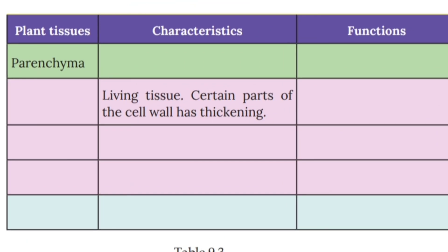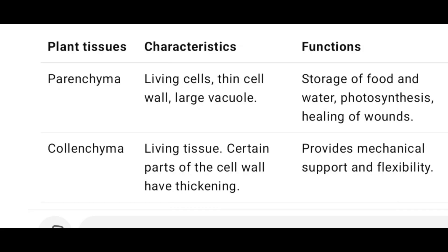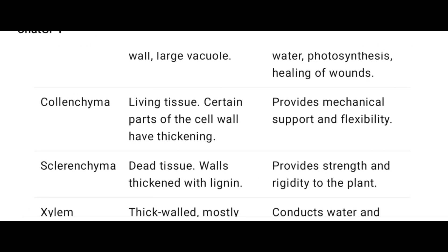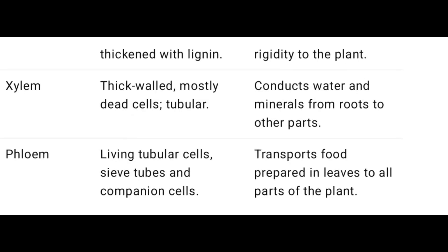Here is a table for plant tissue characteristics and functions. Parenchyma: living cells, thin cell wall, large vacuole; function is storage of food and water, and photosynthesis. Colenchyma: living cells, certain parts of cell wall have thickening; provides mechanical support and flexibility. Sclerenchyma: dead tissue with thickened walls; provides strength and rigidity to the plant.